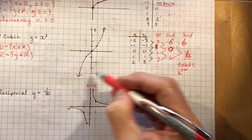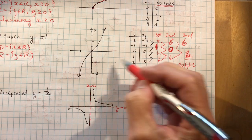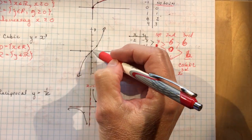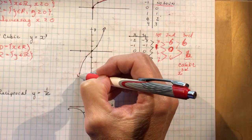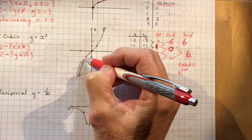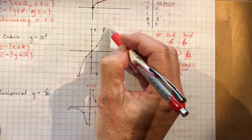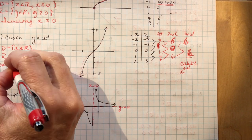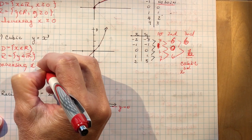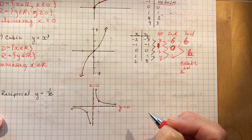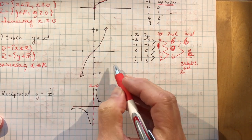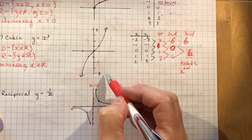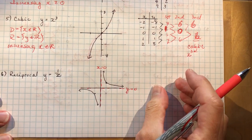Where is the cubic function increasing? It's increasing for all values of x because as I come from the left — don't look at the arrow, just look at what's happening — we're going up everywhere. So it's increasing for x is an element of real numbers, all x's. In grade 12 you might use interval notation, but I'm not going to introduce that here because it's not part of the grade 11 curriculum.